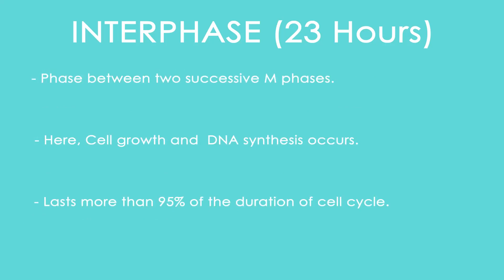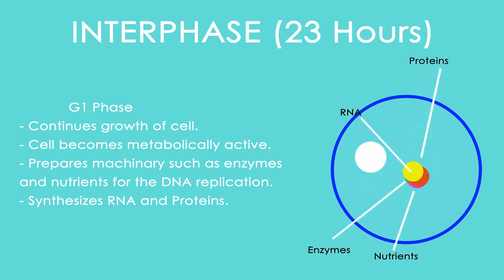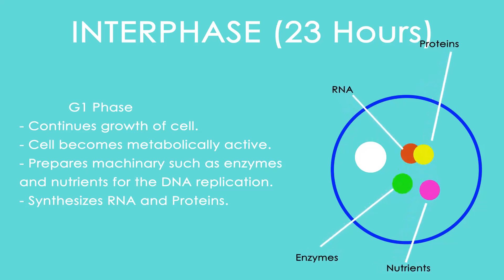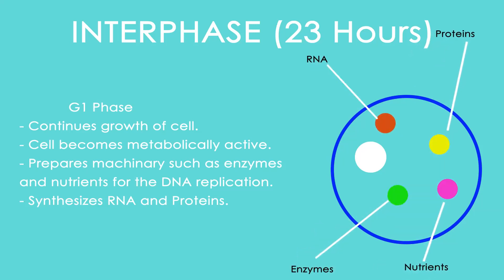Interphase is the phase between two successive M phases, during which cell growth and DNA synthesis occur. It lasts more than 95% of the duration of the cell cycle and contains three sub-phases. First is the G1 phase, also called the first growth phase — the interval between mitosis and DNA replication. Key events include continuous cell growth, the cell becoming metabolically active, and preparation of machinery such as enzymes and nutrients for DNA replication.